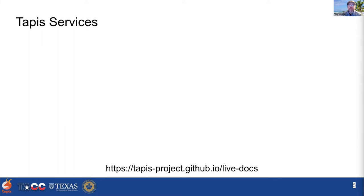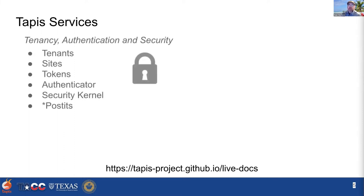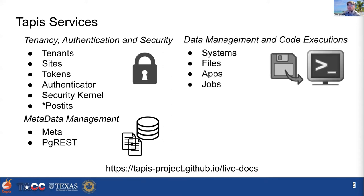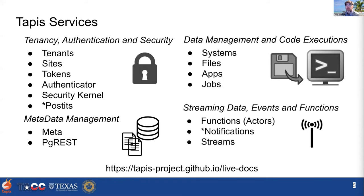TAPIS services fall into four major areas: tenancy, authentication, and security; metadata management to track information about objects in the system; data management and code execution; and streaming data, events, and function support. You can find live API docs at the project.org page.